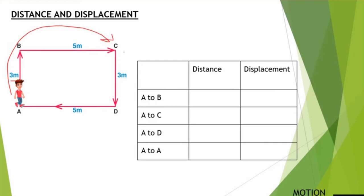For the displacement from A to C, the initial position is A and the final position is C. I'll connect these two points with a straight line to get a right-angle triangle, right-angled at B. Using the Pythagoras theorem: AC² = AB² + BC², which gives us the square root of 34, approximately 5.83 meters.